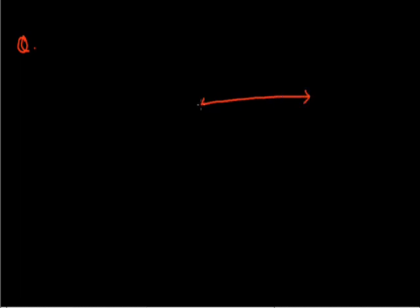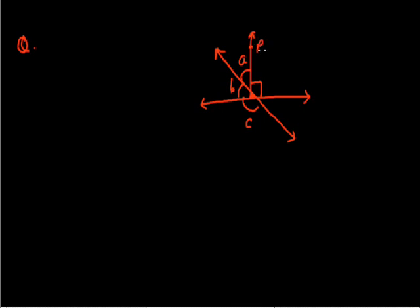The next question: there is one figure given. There is a straight line. This angle is A and this angle is B, and this is 90 degrees. The complete angle at point O on this line — this is Y, this point is X, and this point is O.